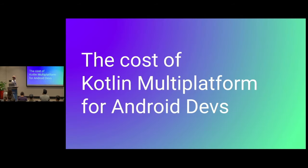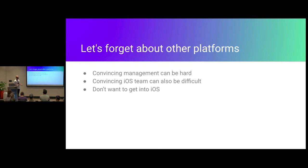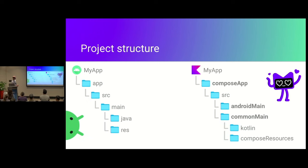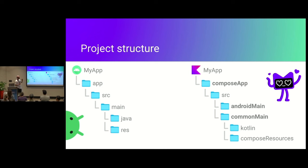What is the cost of multiplatform for an Android developer or Android team? For a minute we'll forget about how to convince management, because it can be very hard to get management-approved KMP or convince your iOS peers — or even yourself — to start building some Swift code. The things you'll need to do: first, the project structure is going to slightly change. You won't have a main module anymore, but you will have multiple modules. Foremost, you'll include a new module called the common main module, where all your Kotlin code lives. For a small standard app you'll always have Android and common main as a minimum.